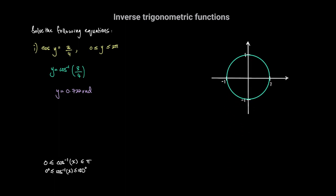If we look at that angle on the unit circle, 0.722 radians is between 0 and pi over 2 radians, so it will be in the first quadrant. So the cosine of 0.722 is equal to 3 over 4. We know that the cosine of the angle is simply the x-coordinate of the point on the unit circle.